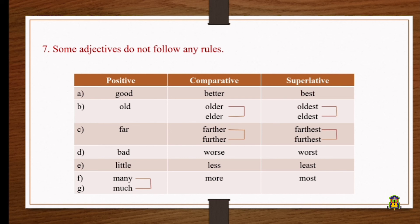Similarly, 'old' becomes 'older' and 'oldest,' or alternatively 'elder' and 'eldest.' 'Far' becomes 'farther' and 'farthest.' 'Bad' — the comparative is 'worse' and the superlative is 'worst.' 'Little' becomes 'less' and 'least.' 'Many' — the comparative is 'more' and the superlative is 'most.' The same applies to 'much': comparative 'more,' superlative 'most.'